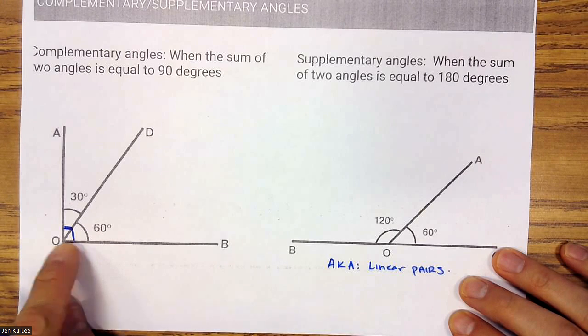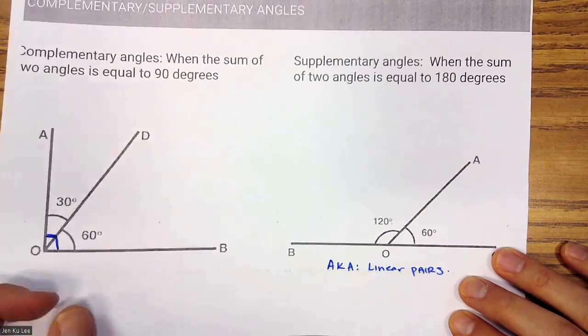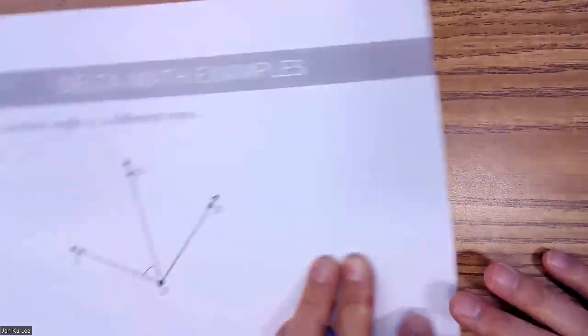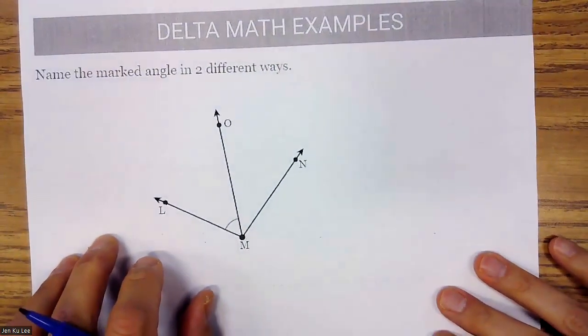We can draw a box around 90 degrees because that box means they are a right angle — complementary angles. Those are the four different types of relationships. Now we're going to do some delta math examples.